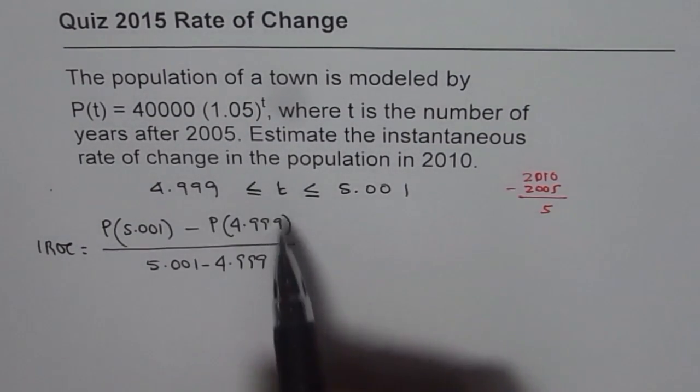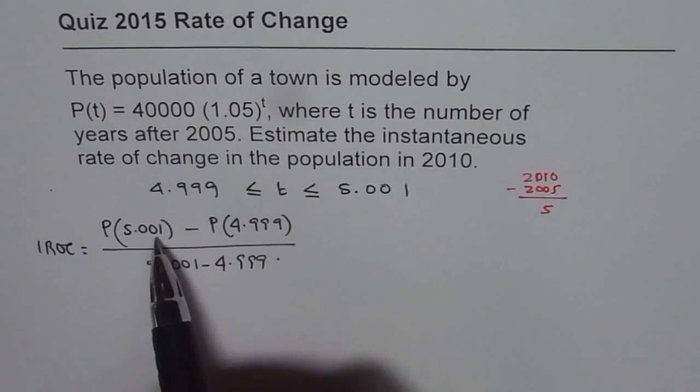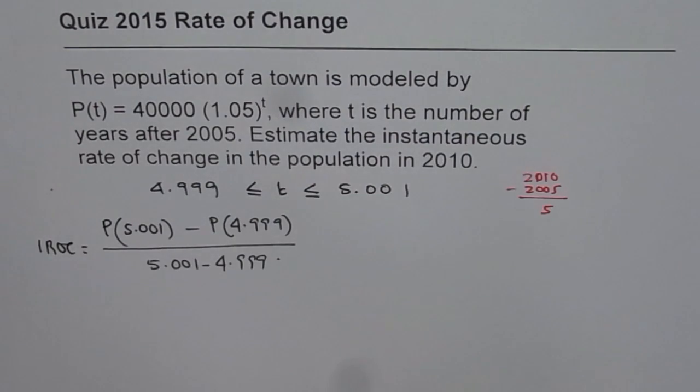Now you can use your calculator. Substitute 5.001 for t. Calculate your value. Once you calculate this value,